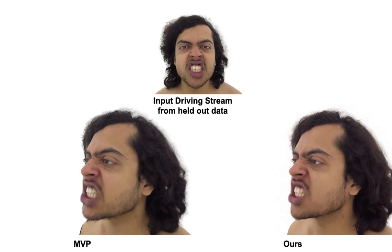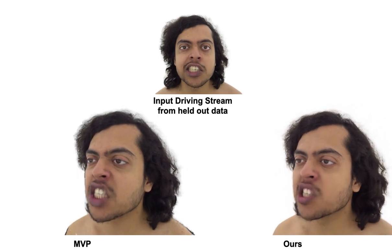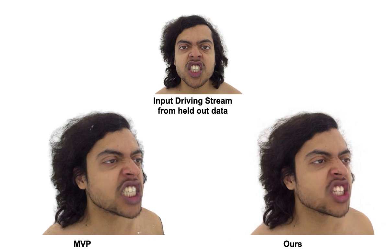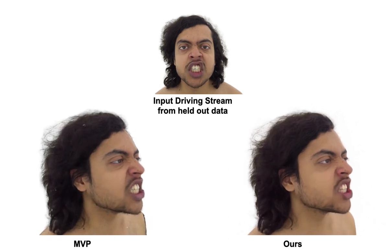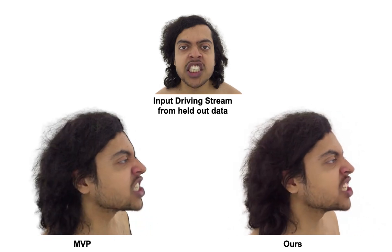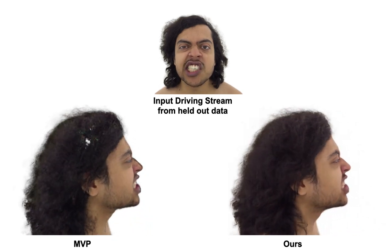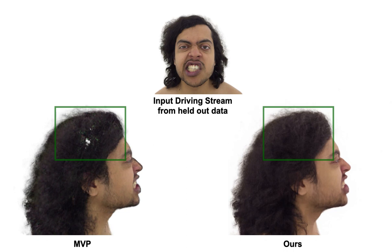We compare against the state-of-the-art in multi-view human head reconstruction approaches: Mixture of Volumetric Primitives (MVP). We highlight that MVP struggles to render details in regions that are sparsely captured by our camera setup, such as the highlighted region.